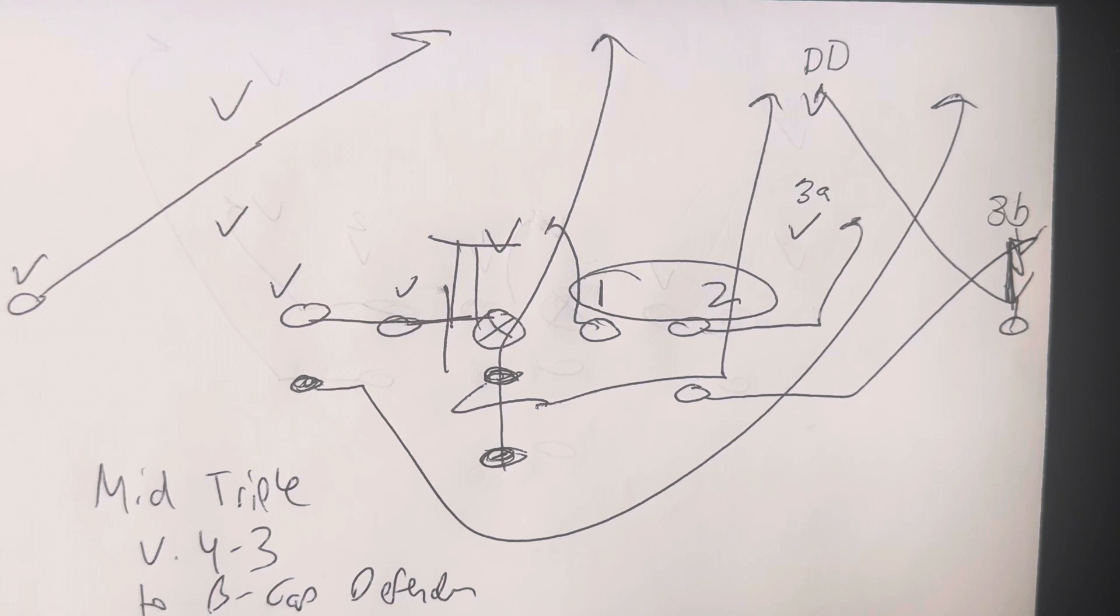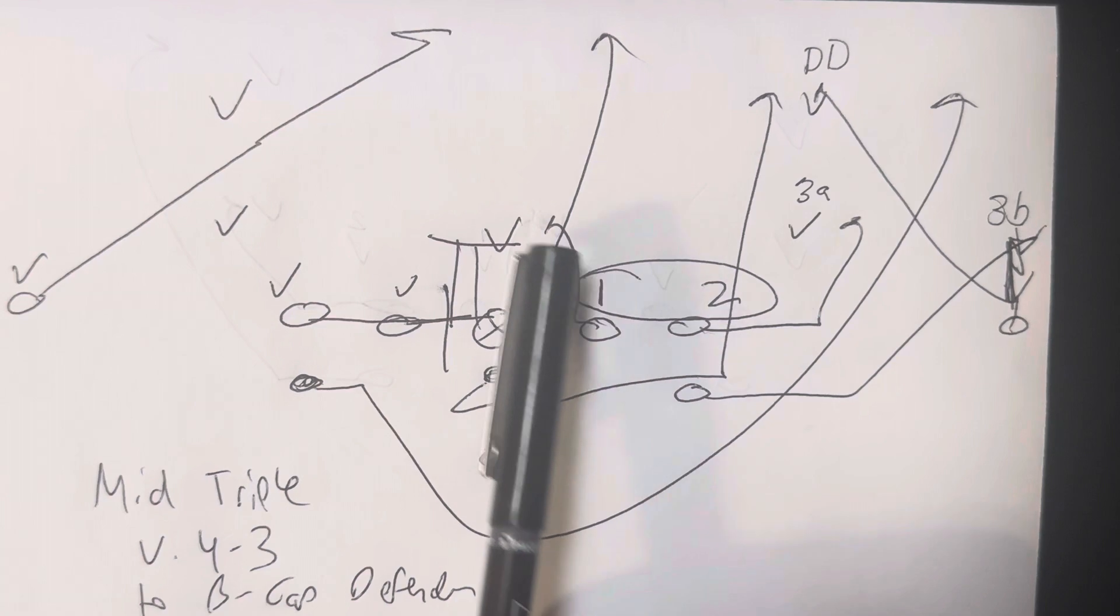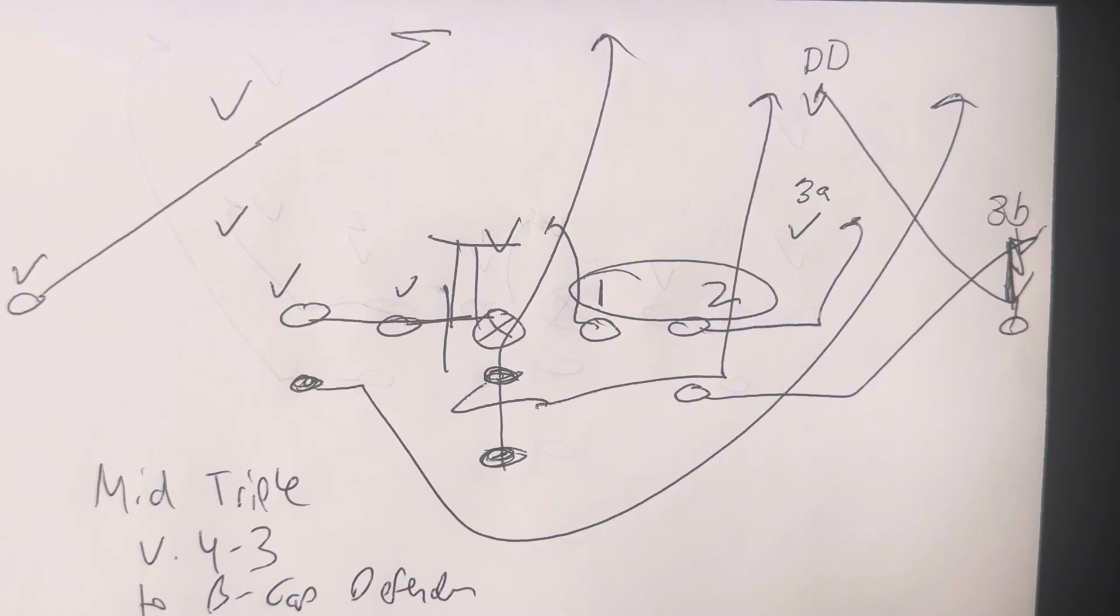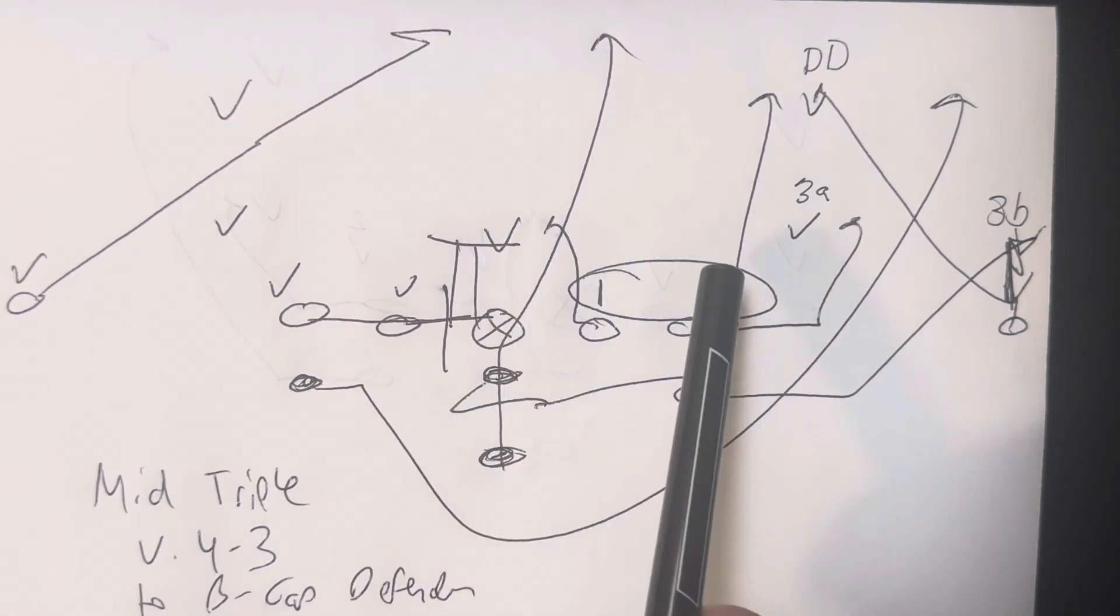But now you've got to pull the tackle. The other problem that exists is if he and the mic scrape exchange, he takes the dive and comes over the top, and the guard doesn't get there, you're 3-on-3. Now you've got a situation where your triple option, which has three people, they're going to have three to defend three, and that's a real problem. That's the problem with running midline triple against a 4-3 to the B-gap defender side.